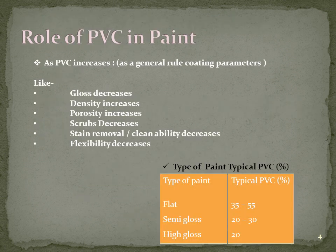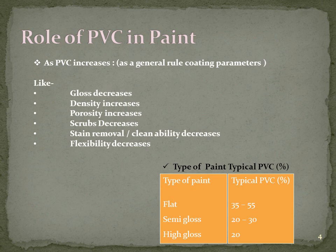Now let's describe the role of PVC in paint — why we consider PVC and why interviewers ask this question. There are properties related to PVC: as a thumb rule, when PVC increases in a coating, gloss will decrease. Since PVC is the ratio of pigment volume to total solid volume, increasing PVC means resin decreases, and since gloss comes from resin, gloss automatically decreases.